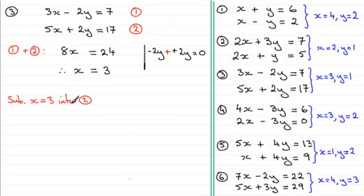So if I substitute x equals 3 into equation 2 then what I've got is 5x, 5 times 3. So we've therefore got 5 times 3 plus the 2y equals the 17. And so what I've got here is 15 plus the 2y equals 17.